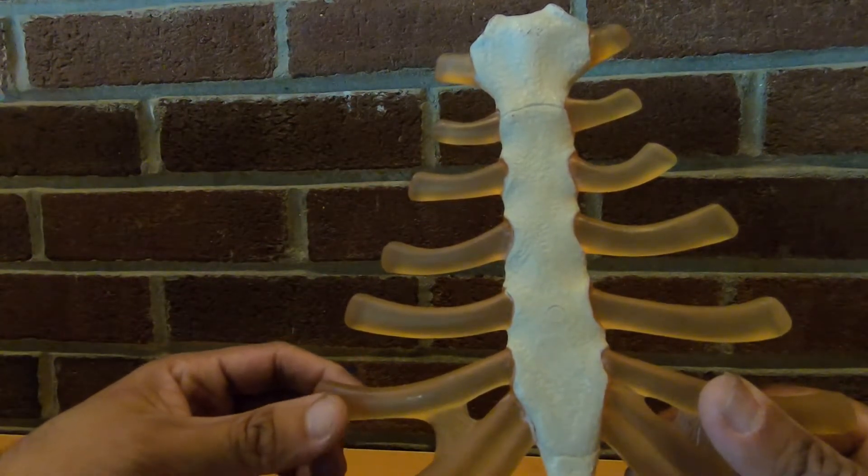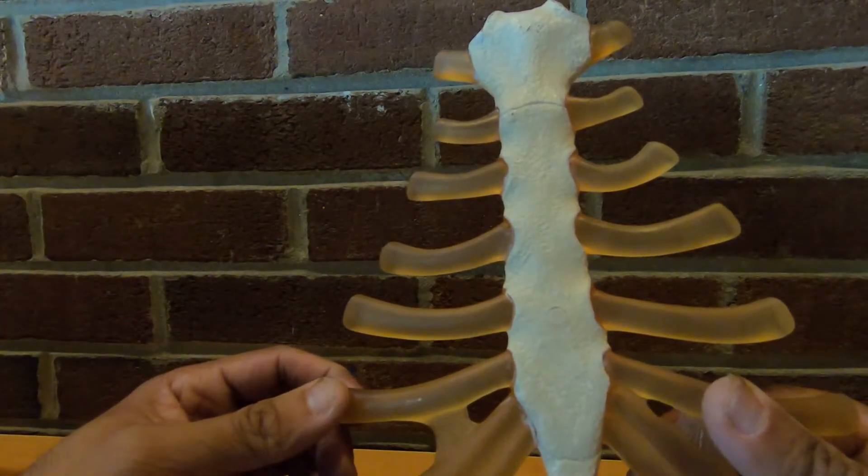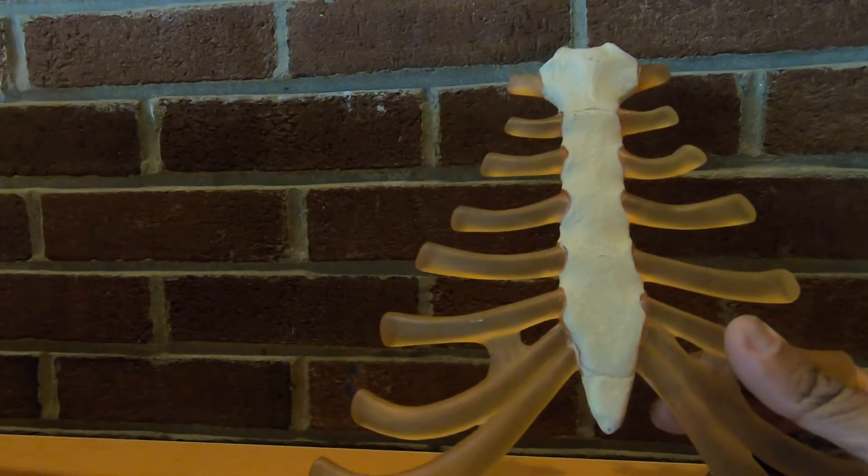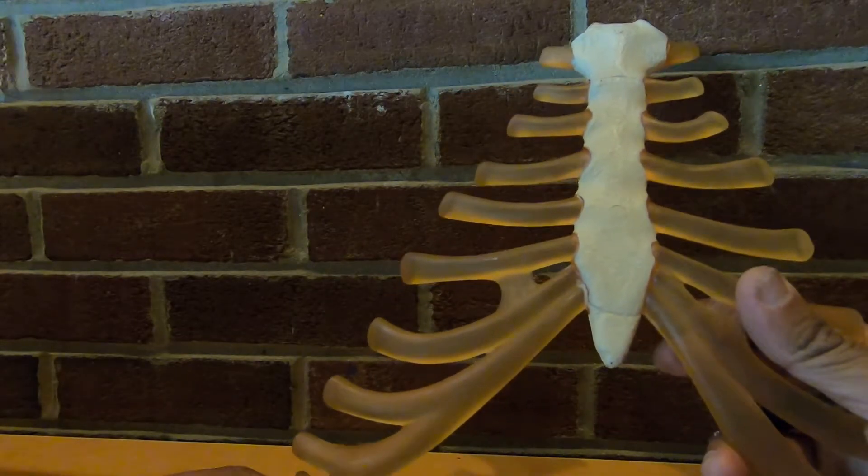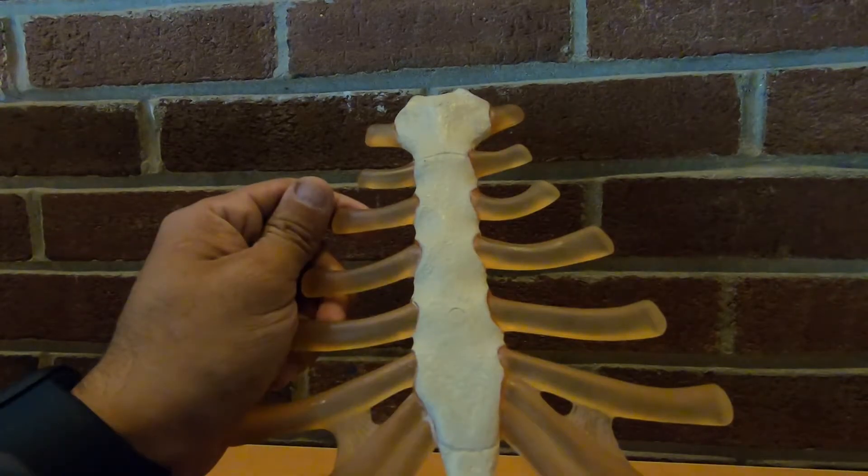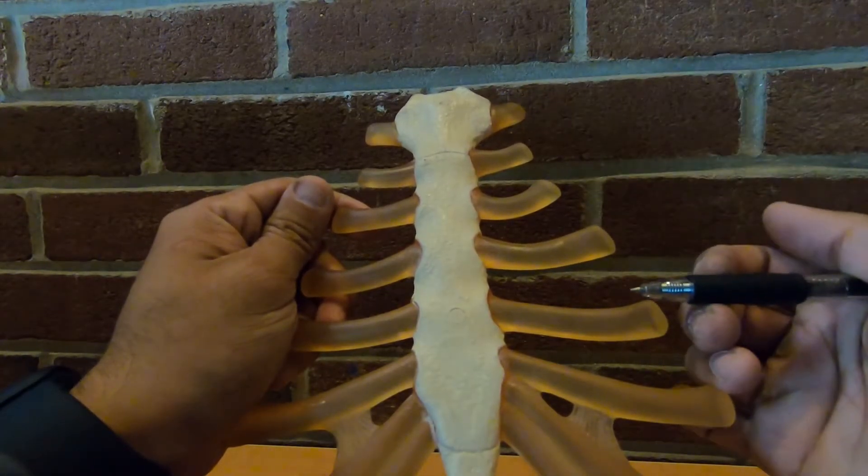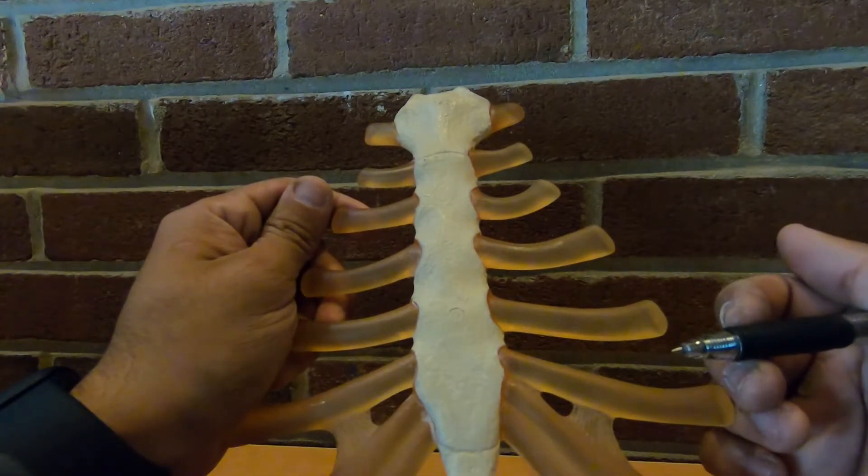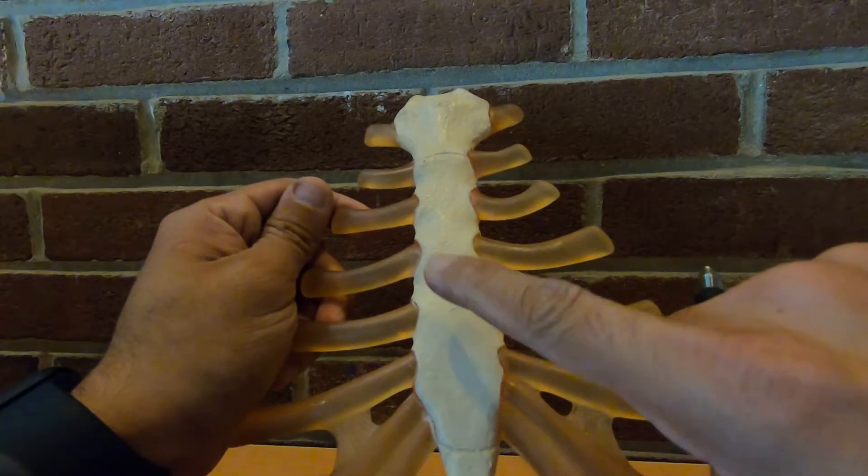Ribs number 8 to 12 are actually false ribs, with the last two ribs, which you will not see here, they are floating ribs because they don't have any direct connection with the sternum. So we have 12 pairs of ribs, and ribs 1 to 7 are referred to as the true ribs because they connect to the sternum via costal cartilage.